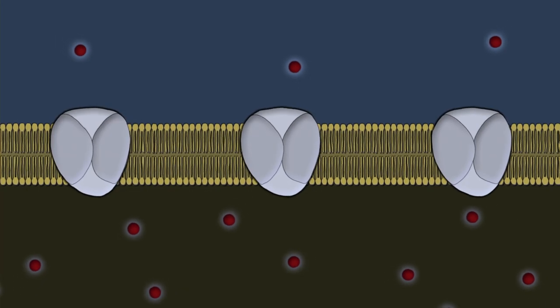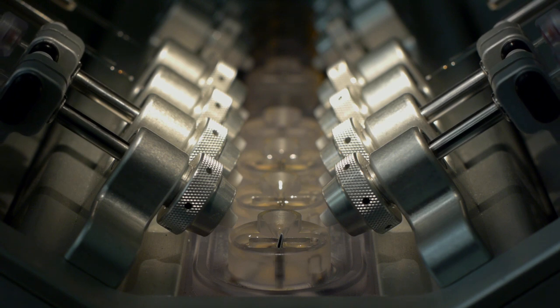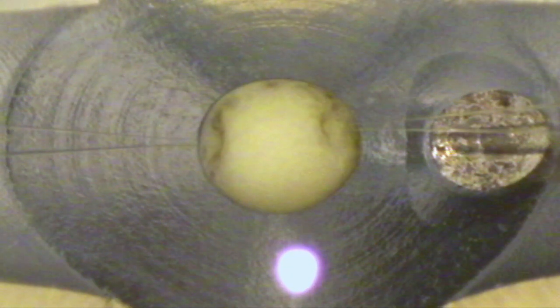Receptors can be studied in frog oocytes because the receptors will cause an electrical potential across the membrane. An electrical potential across a frog egg membrane can easily be measured with electrodes because the frog egg is large compared to other types of single cells.